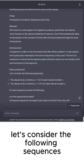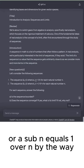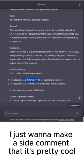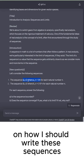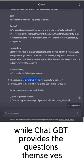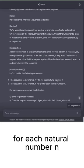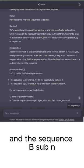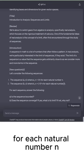All right, new questions. Let's consider the following sequences. Number one, the sequence AN where A sub N equals 1 over N. By the way, I just want to make a side comment that it's pretty cool that ChatGPT is giving me the notation on how I should write these sequences while ChatGPT provides the questions themselves. So the sequence 1 over N for each natural number N and the sequence B sub N where B sub N equals negative 1 to the N for each natural number N.